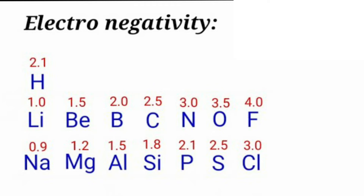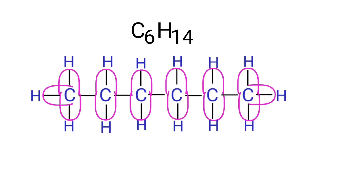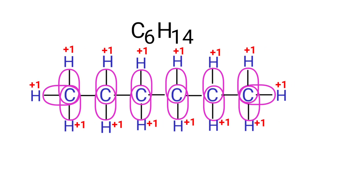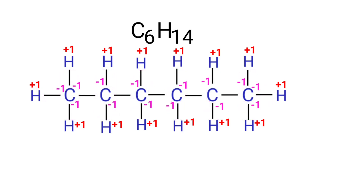As per the electronegativity chart, carbon has more electronegativity than hydrogen. So in C-H bonds, the carbon atoms draw the bonding electrons towards itself. Therefore, the oxidation number of hydrogen is +1 and the oxidation number of carbon in C-H bonds is -1. In C-C bonds, the carbon atoms have the same electronegativity, so the oxidation number of carbon in C-C bonds is 0.